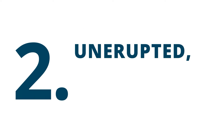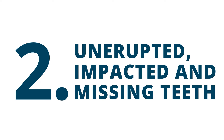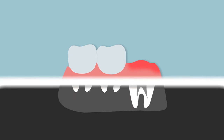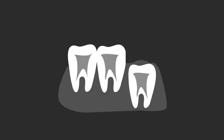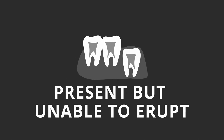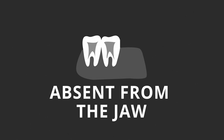2. Unerupted, impacted, and missing teeth. Dental x-rays are useful in finding teeth that do not appear inside the mouth when they should. When someone is missing a tooth, it is important to determine whether that tooth is present but unable to erupt, present but impacted in the wrong position, or completely absent from the jaw.